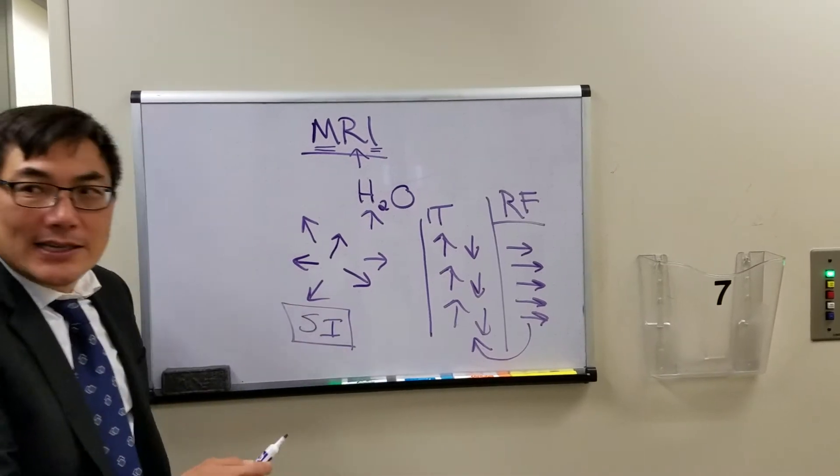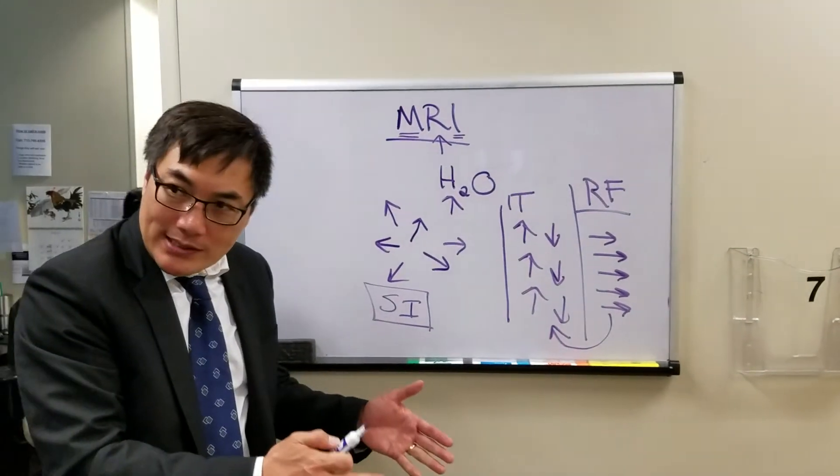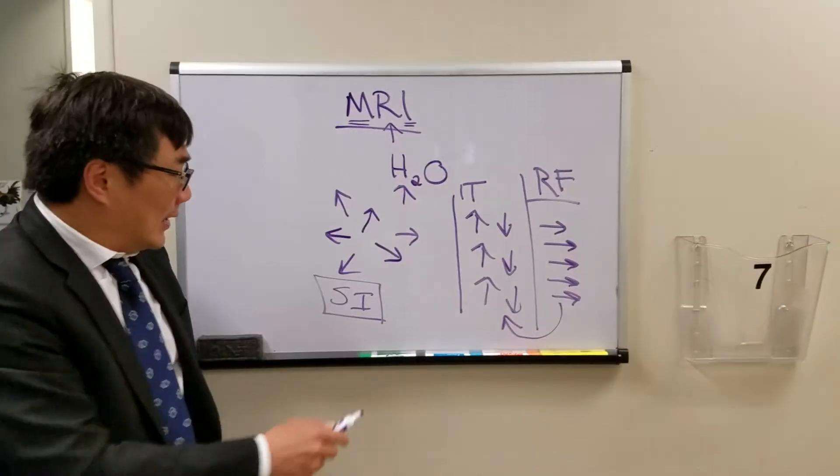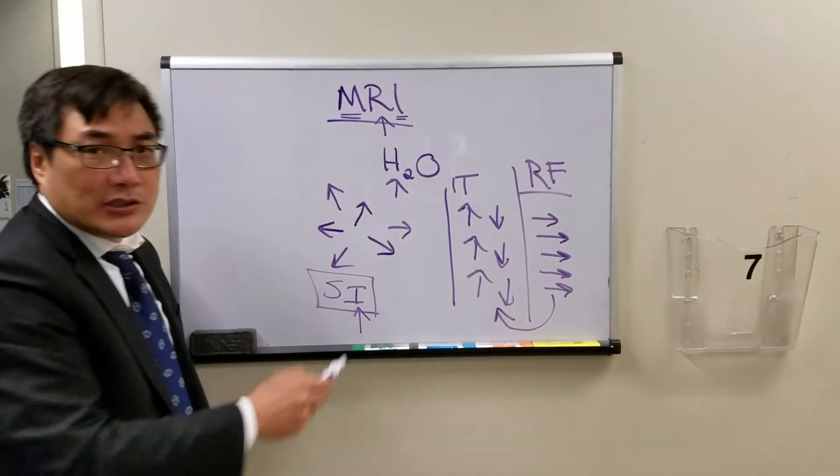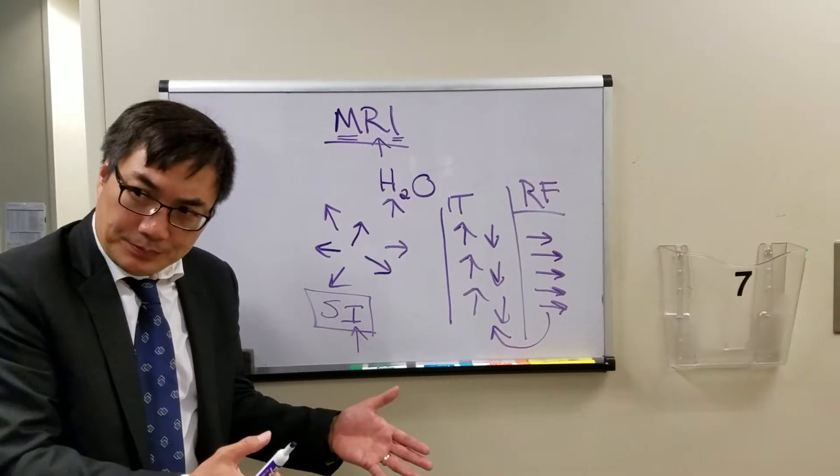So the language of MR is signal intensity, hyper intense, hypo intense, iso intense, because intensity is the language of MRI, as opposed to CT, where the parameter is density.